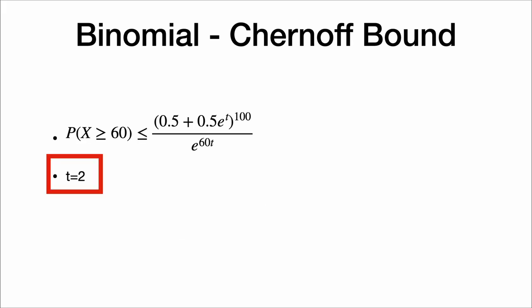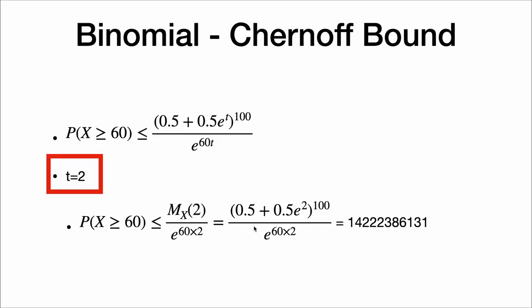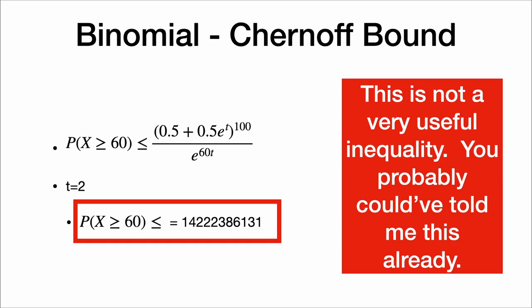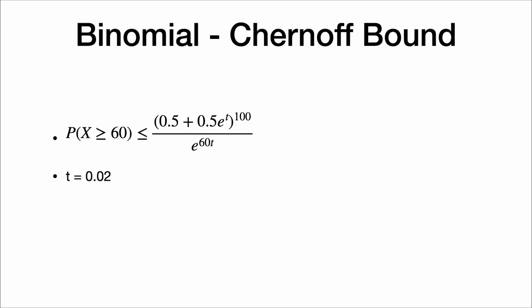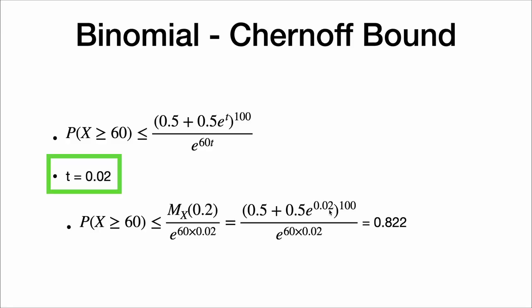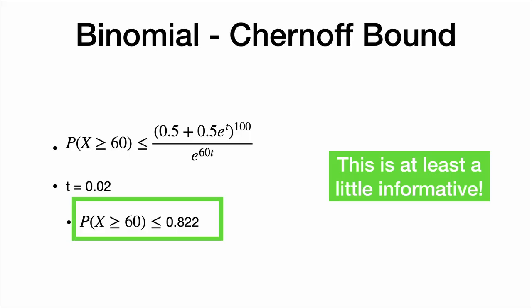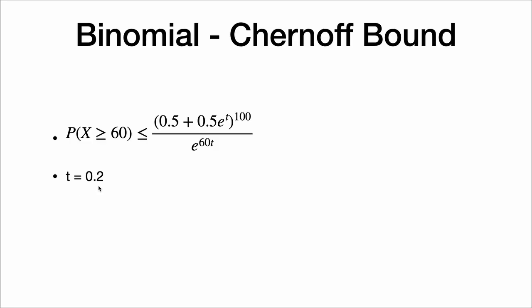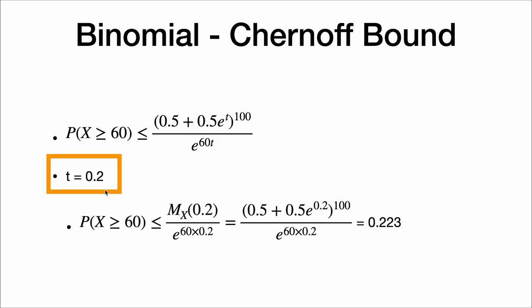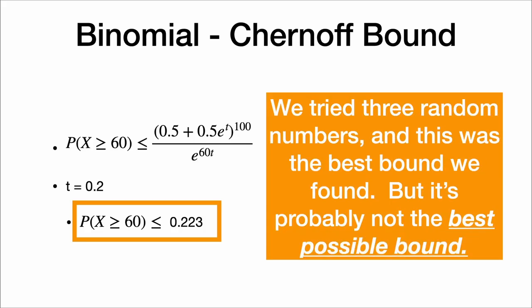Let's try t equals 2, just a random number. Plugging in t equals 2 gives a really big number — the probability is less than a billion or so — which is obviously not helpful since we know the probability is less than 1. Now let's try t equals 0.02: the probability is less than 0.822, about as good as Markov's. If we go in between and try t equals 0.2, we actually get 0.223 — now we're getting closer and closer to the true value of 0.028. We tried three random numbers and this was the best bound, but it's probably not the best possible bound.